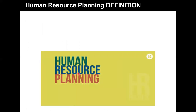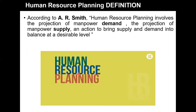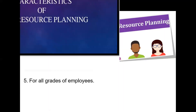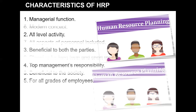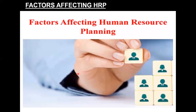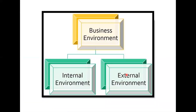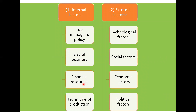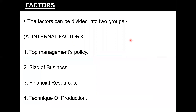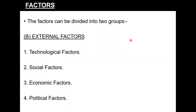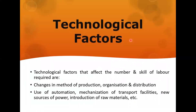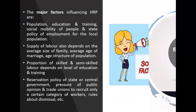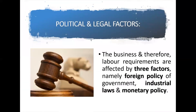Students, you have covered the definition of human resource planning and the different factors affecting it. I hope you remember both categories — internal factors, within the control of the organization, and external factors, beyond its control. We discussed four factors each, including technological, social, economic, and political and legal factors.